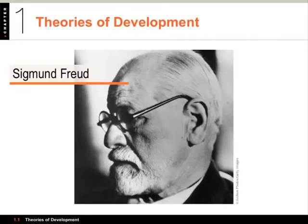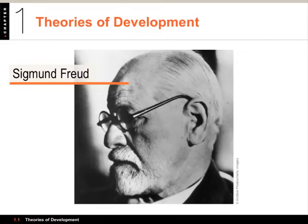Freud also talked about five stages of psychosexual development: the oral, the anal, the phallic, latency, and genital periods. He said fixations or problems that did not get resolved could occur in each of these stages, and they would result in particular adult problems.